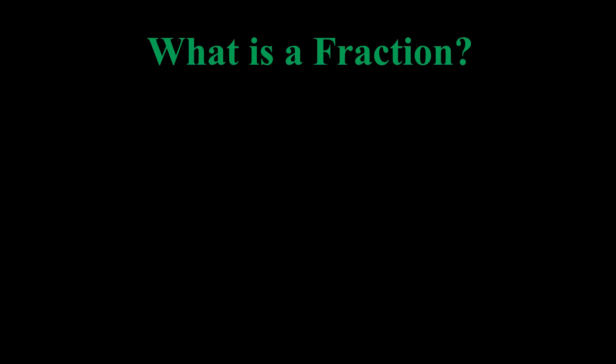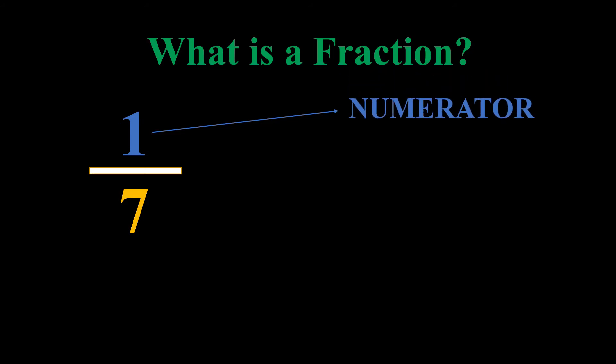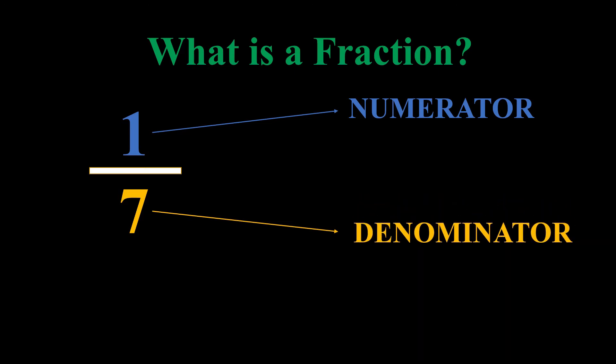We're going to start off with what is a fraction. Before we get into the definition, let us look at this fraction right here, which is one seventh. This is an example of a fraction, which reads as one seventh. The one, color coded in blue, is our numerator — the number at the top of the fraction. The seven, color coded in orange, represents our denominator.